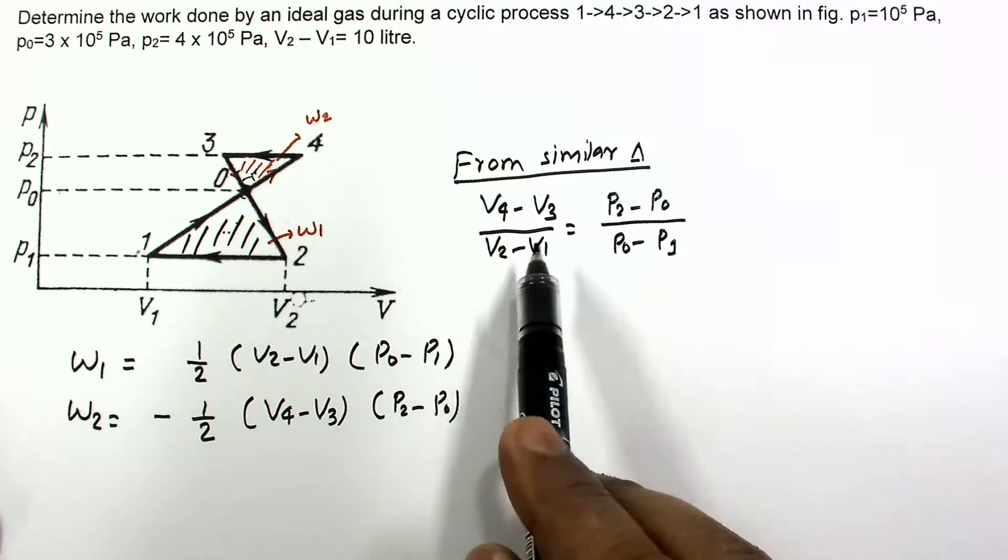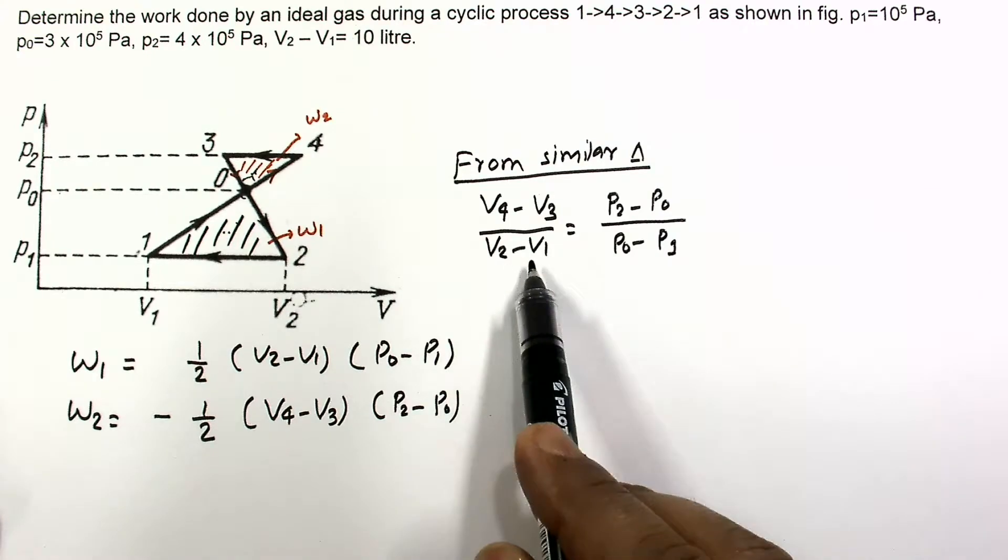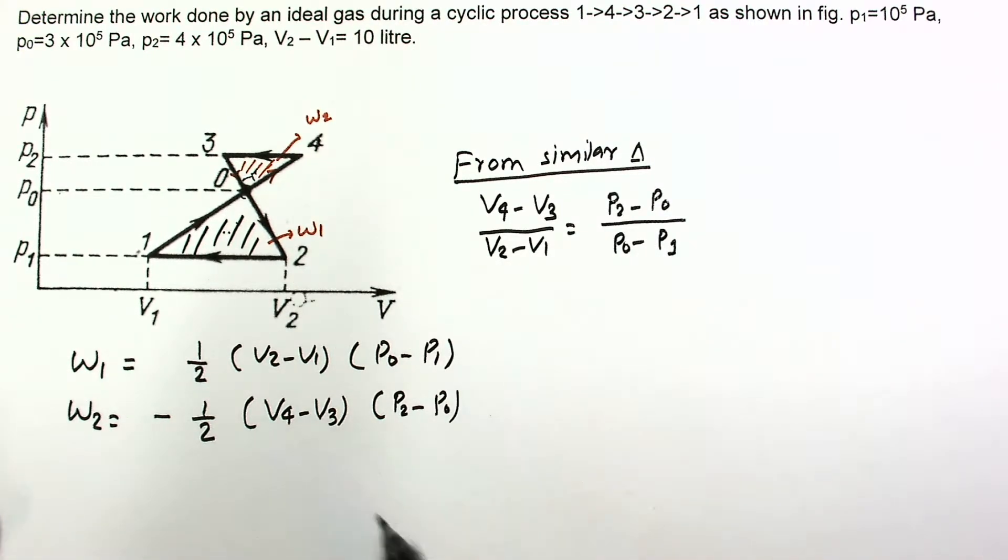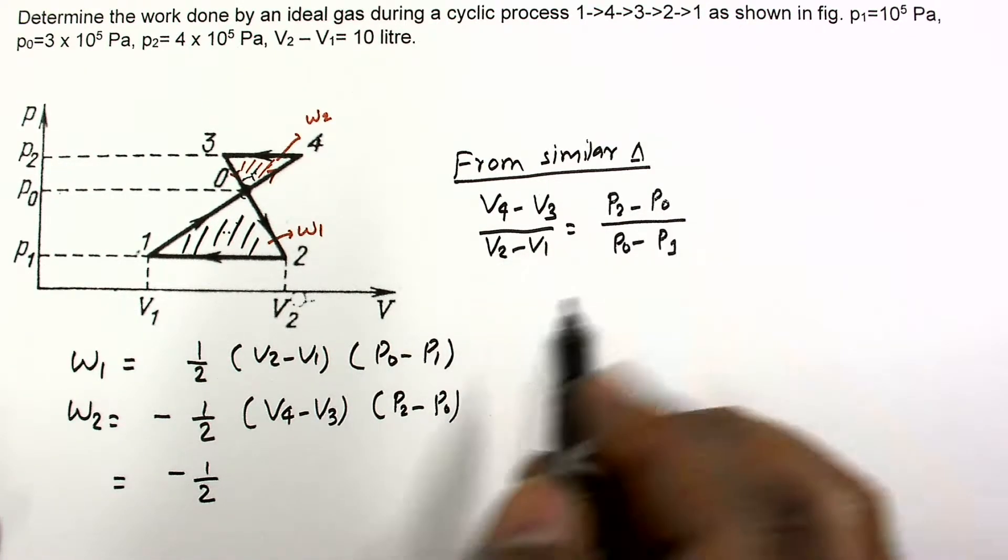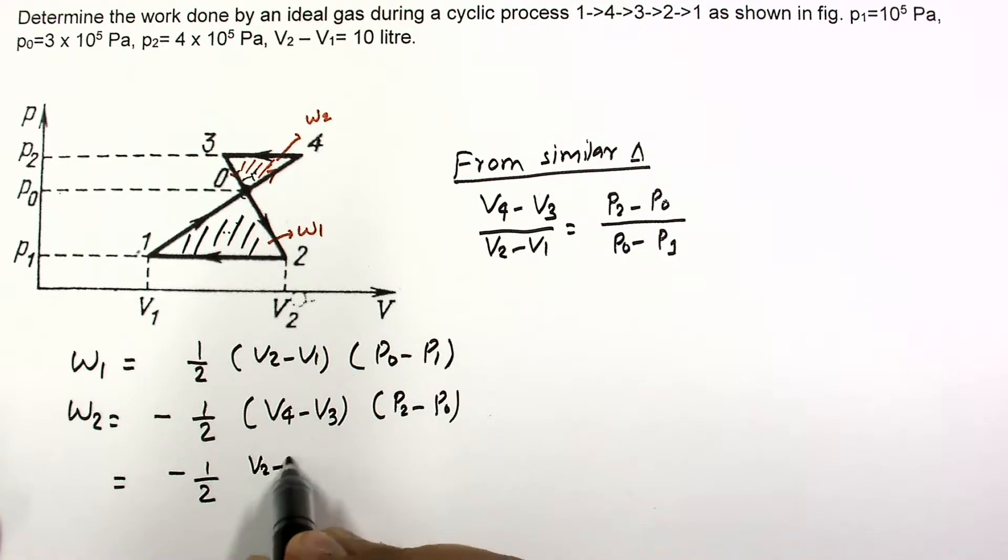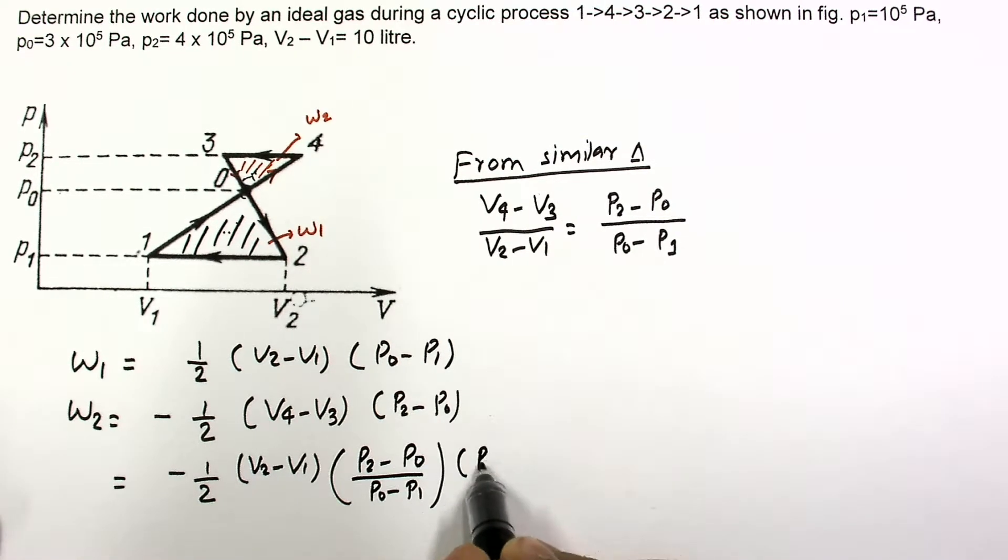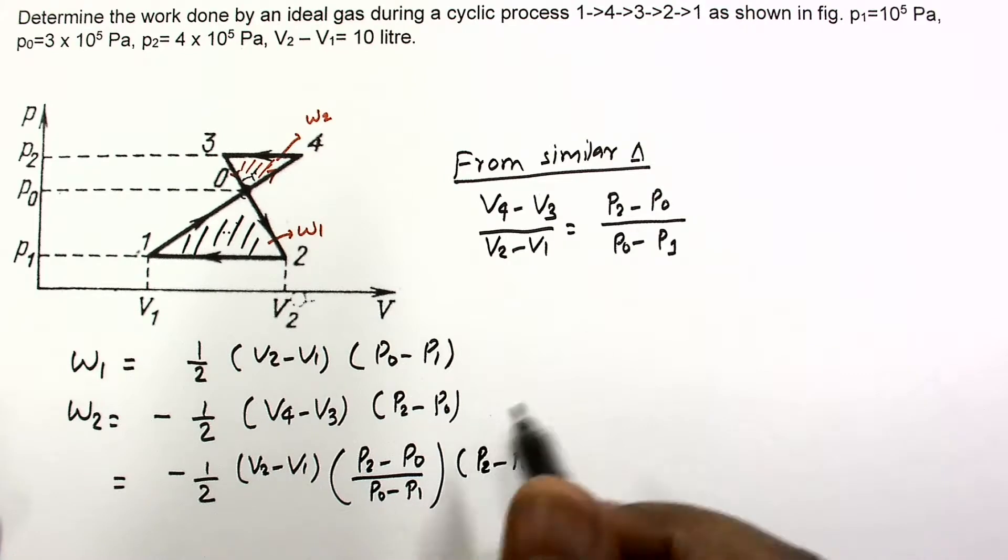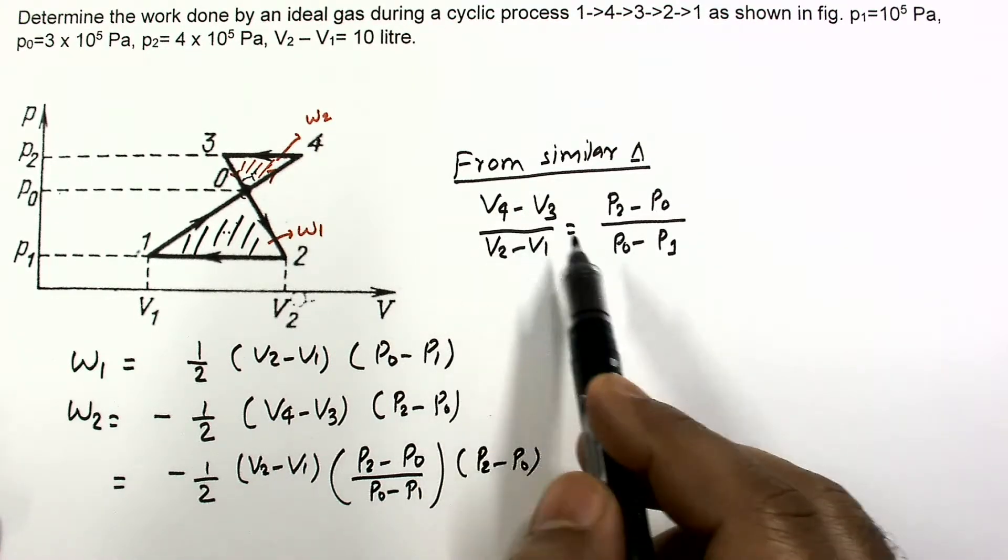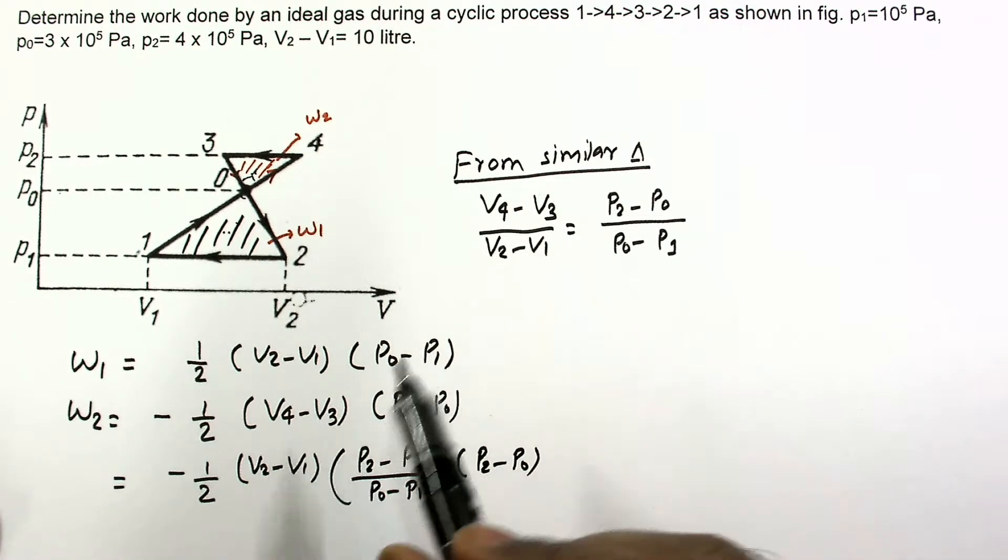So for V4 minus V3, we can put this value in this expression. So it will be minus half, V4 minus V3 is V2 minus V1 multiplied by P2 minus P0 divided by P0 minus P1. This is an important step in this problem. We have to apply this similarity to find V4 minus V3, it is not given.